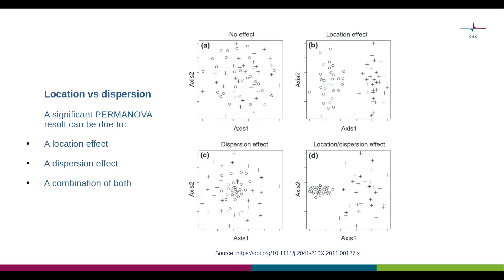The question remains: what do location and dispersion actually mean in practice? More specifically, a PERMANOVA result can be significant due to a location effect, a dispersion effect, or a mix of both.